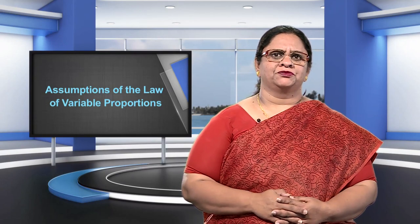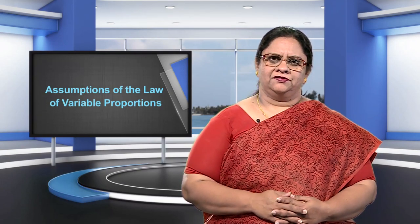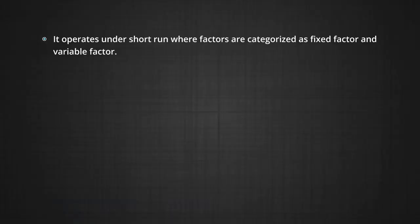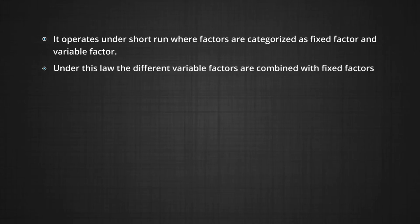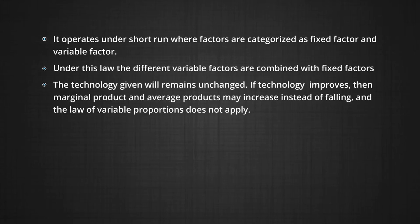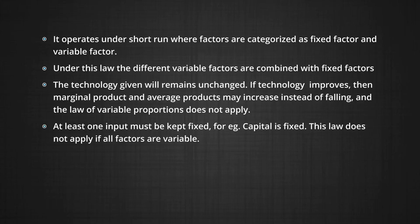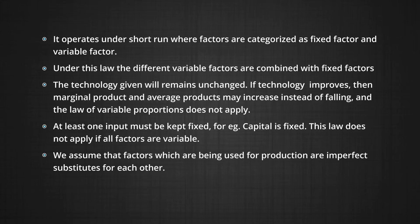Let us now list the assumptions of the law of variable proportions. First, it operates in the short run where factors are categorized as fixed and variable factors, and different variable factors are combined with fixed factors. The technology given remains unchanged. If technology improves, then the marginal product and average product may increase instead of falling and the law of variable proportions will not apply. At least one input must be kept fixed — for example, capital is fixed. This law does not apply if all factors are variable. We also assume that factors used in production are imperfect substitutes for each other.